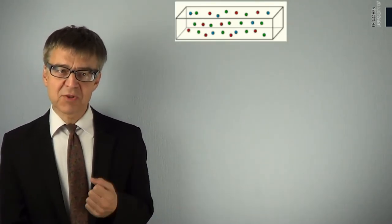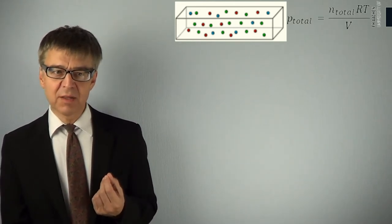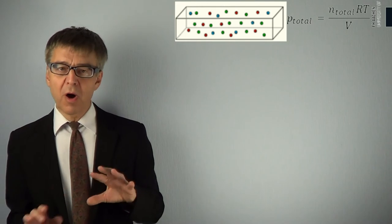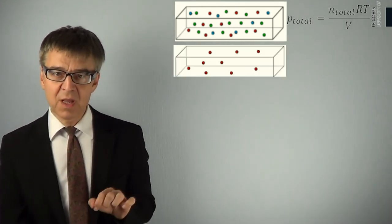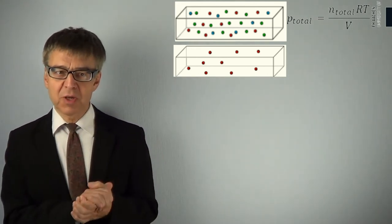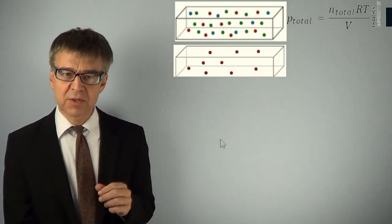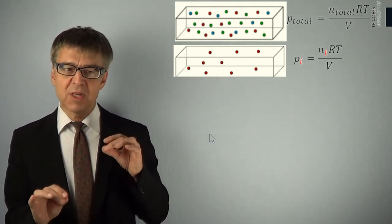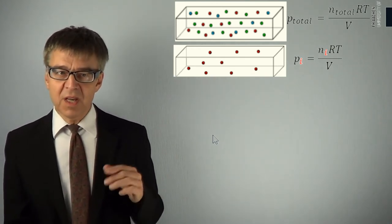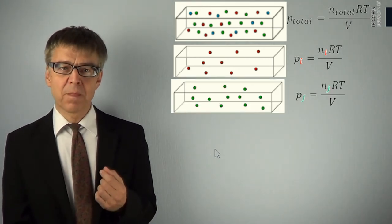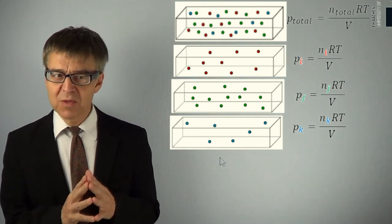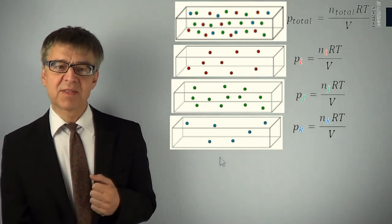The ideal gas law also holds for gas mixtures. If we calculate the total pressure of this mixture, we take the entire amount N total, multiply by RT and divide by V. If we virtually remove all components but one, the red one, we may also calculate a virtual pressure, which was called partial pressure by Mr. Dalton. The partial pressure of the red component is the pressure that this component would exert, if it was the only component in the volume. Each component has a partial pressure in a gas mixture. Although the measurement of the partial pressure requires some effort, selective pressure sensors have to be used, the calculation can be done by the simple ideal gas equation.